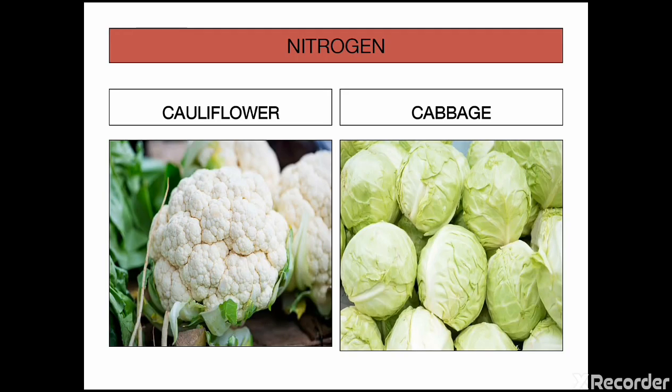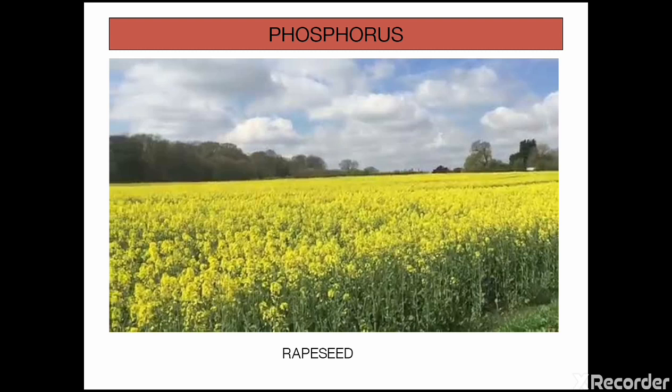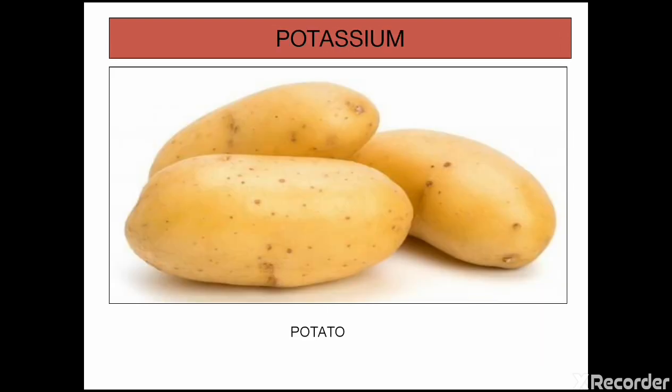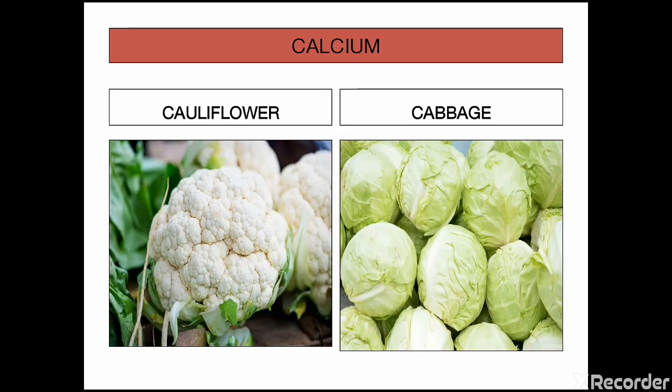In case of nitrogen, it is cabbage and cauliflower. It is rapeseed for phosphorus. In case of potassium, it is potato. And in case of calcium, it is cabbage and cauliflower.